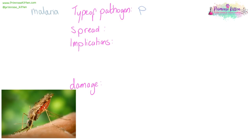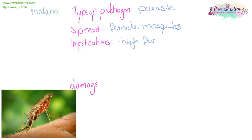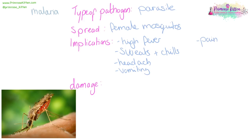Malaria is a parasite, spread by female mosquitoes drinking your blood at night — it's not quite as sexy as Twilight made it out to be. The implications are going to be a high fever, sweats, chills, headache, vomiting, chest and muscle pains, and diarrhoea. This can be lethal in severe cases.